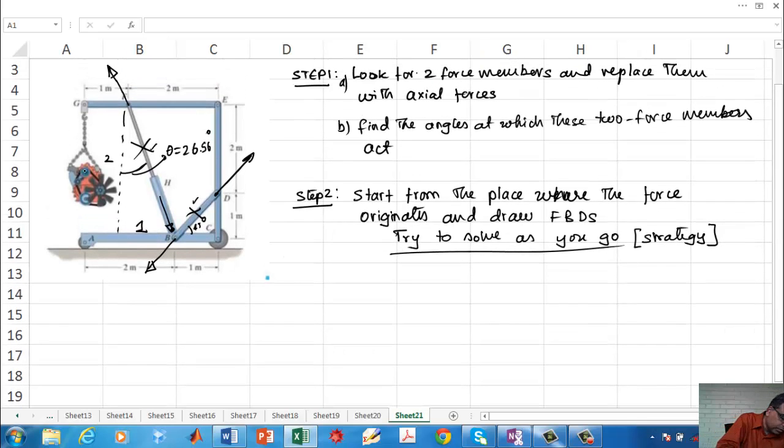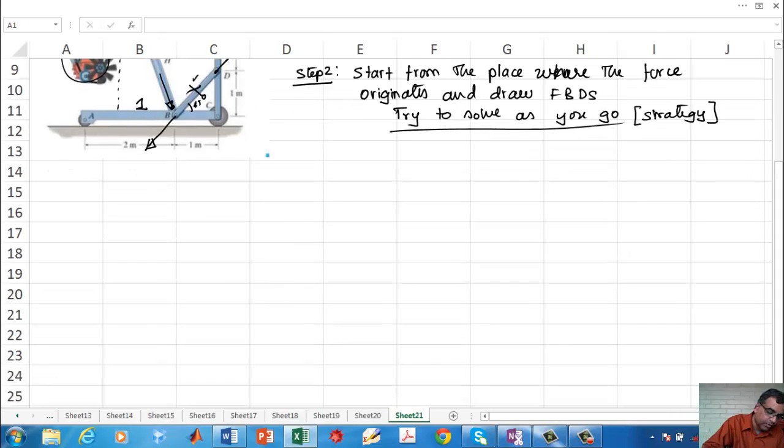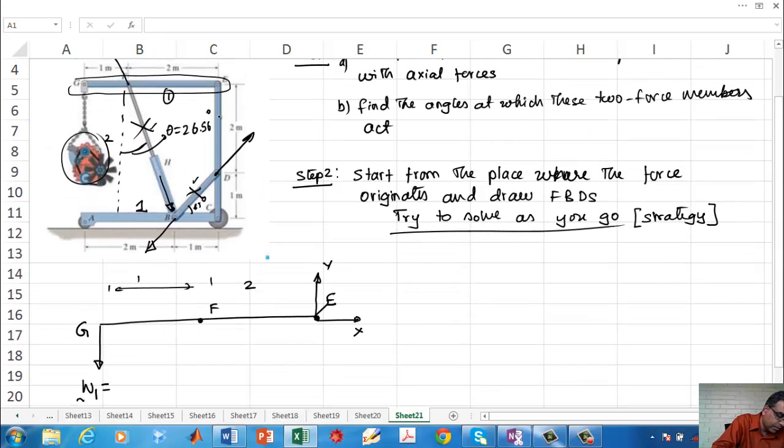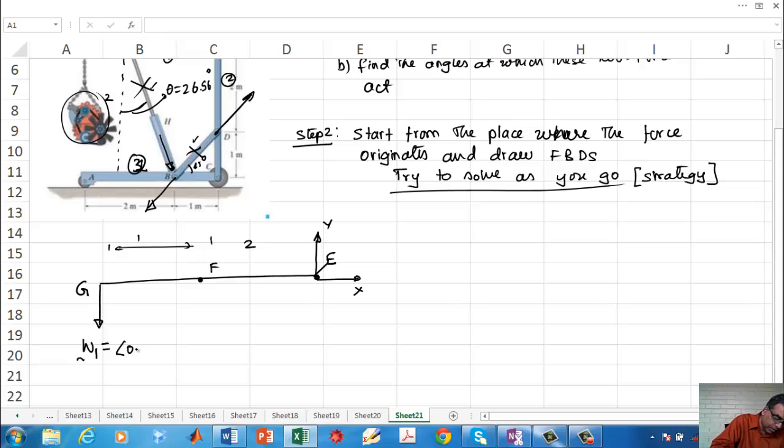So I am going to draw the free body diagram for this bar. This point is G, this point is F, this point is E. I am going to put my coordinate system at the location where there is an unknown pin. This is my X, that is my Y. This distance is two meters, this one is one meter. Here is the force W1.